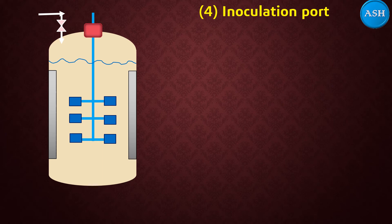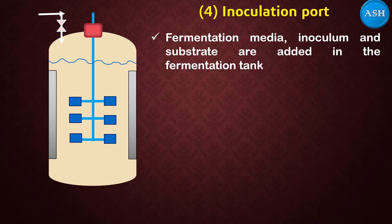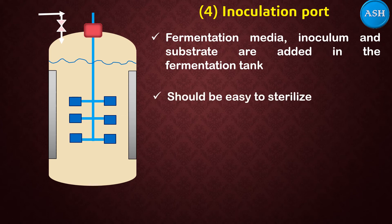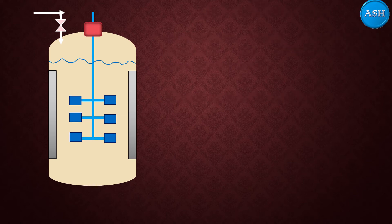The fourth part is the inoculation port. Through this port, the fermentation media, inoculum, or substrate is added into the fermentation tank. You can also see the working level marked there — that is the level up to which contents should be added. The port should also be easy to sterilize.